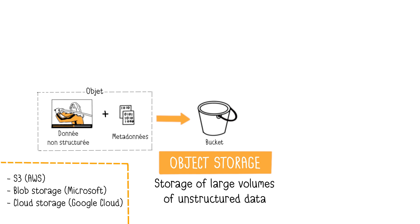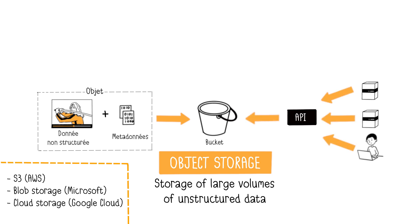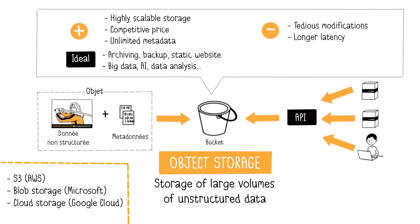Objects are stored in buckets, which are modular units often distributed across storage infrastructures. Object storage offers direct data access via APIs, making data accessible from web applications on any device simultaneously. Compared to the other two types, object storage is the most scalable, rapidly scaling to petabytes of data at a competitive price. Its extensive use of metadata makes data retrieval more straightforward. However, objects cannot be modified — you must create a new object for any changes.